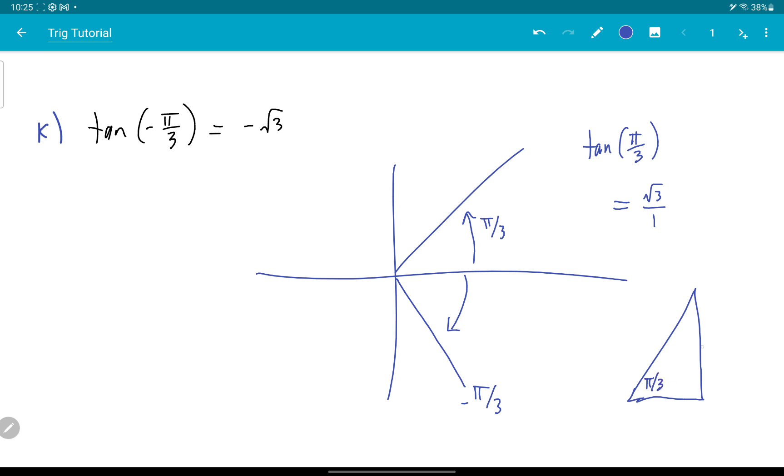So my angle is down here and I get root 3 over 1 for my tan, so that's just root 3.